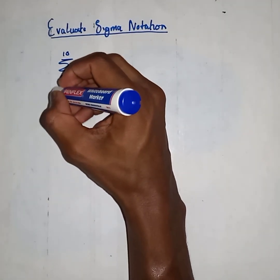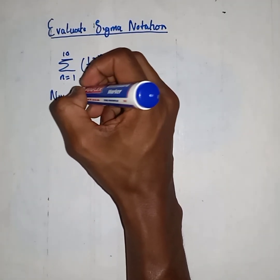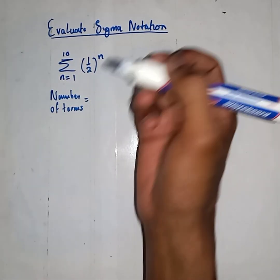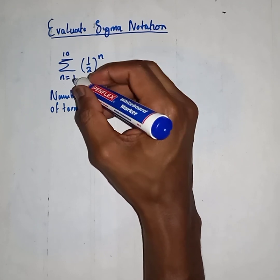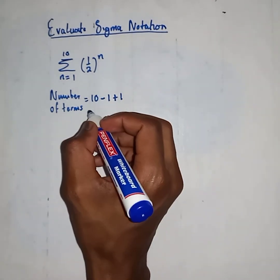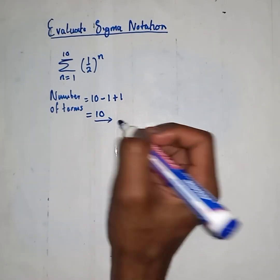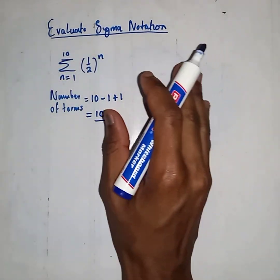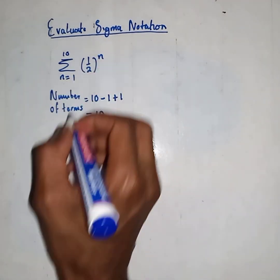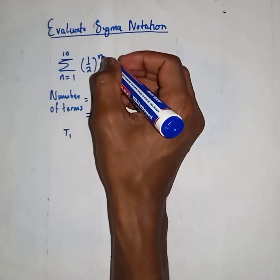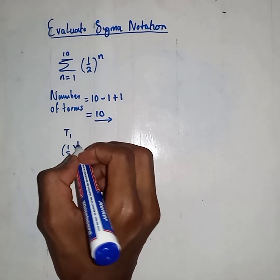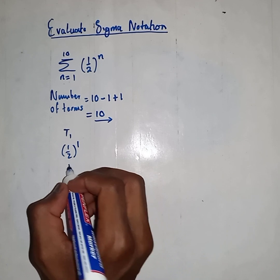Firstly, number of terms: 10 minus 1 plus 1 — don't forget that one — we get 10. Immediately after, let us figure out our series. For term 1, plug in n=1: 1 over 2 to the power 1, which is 1/2.